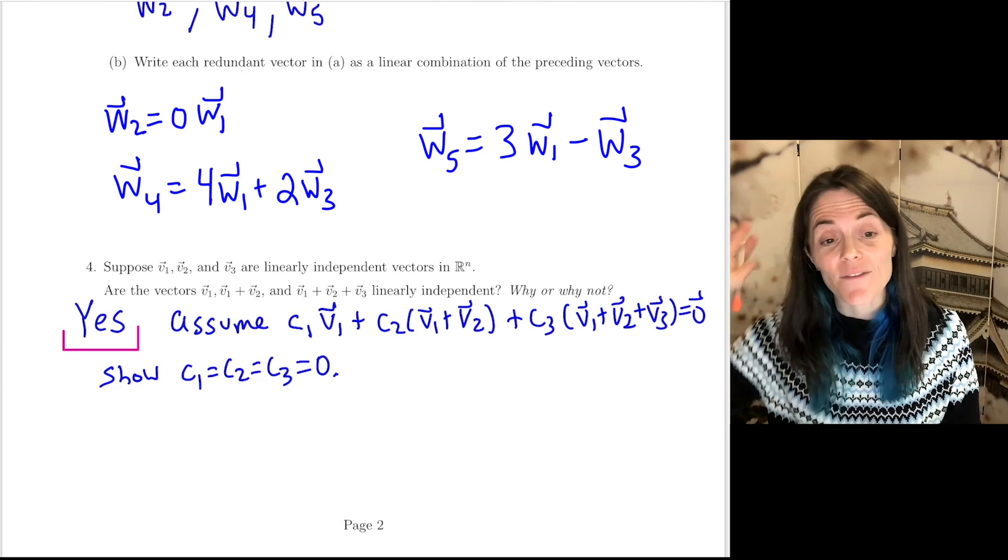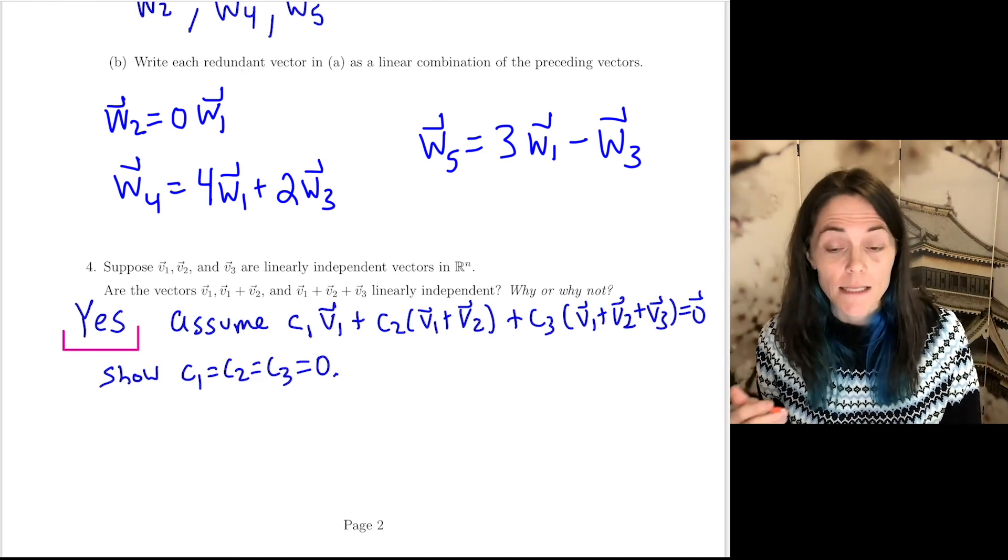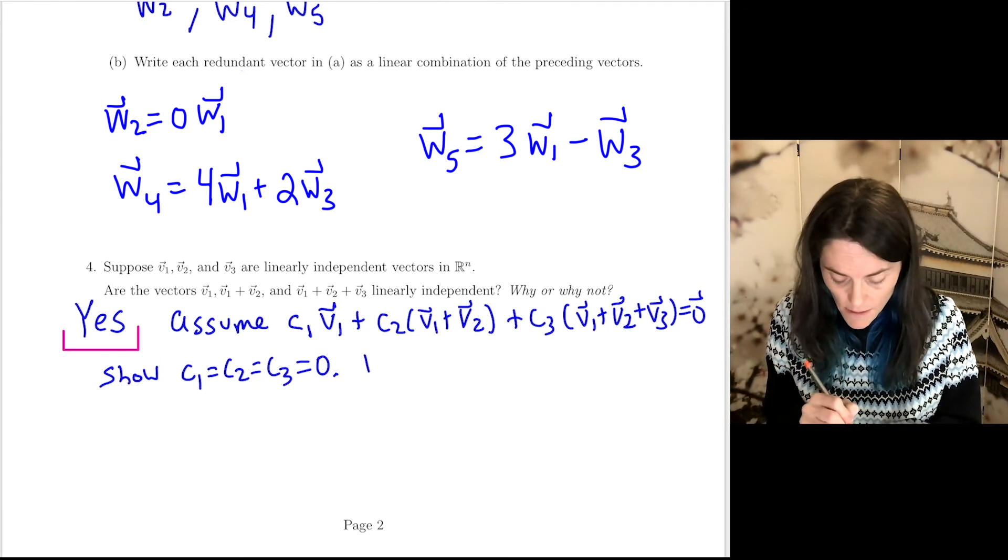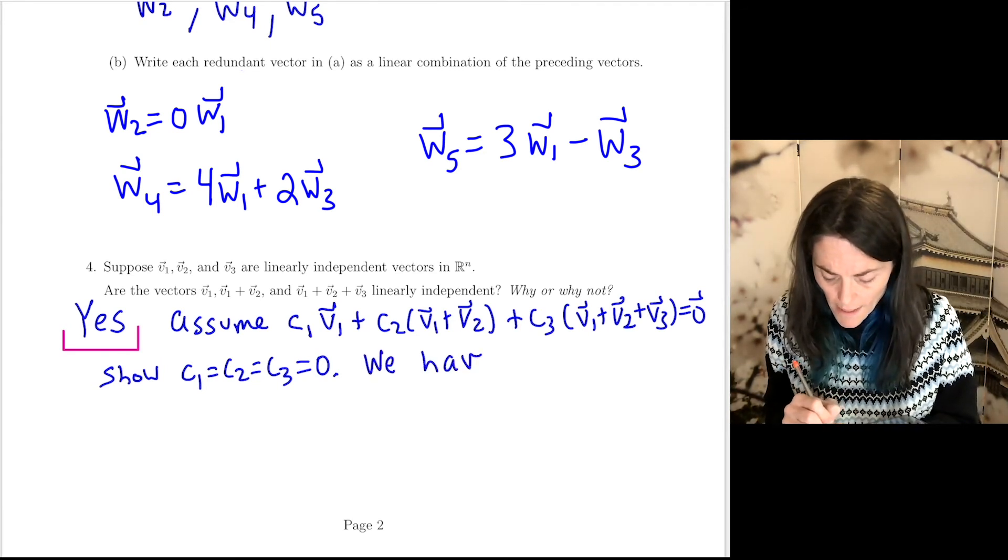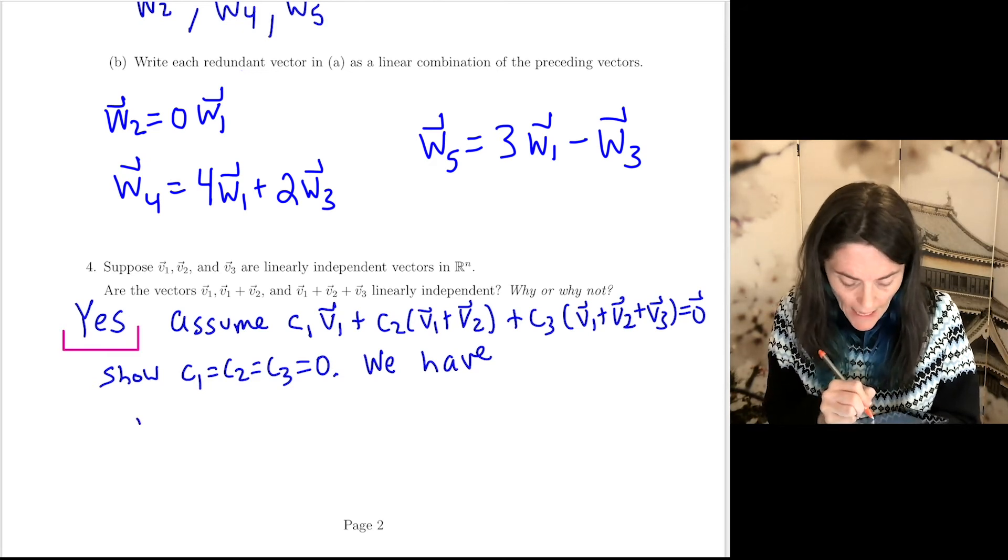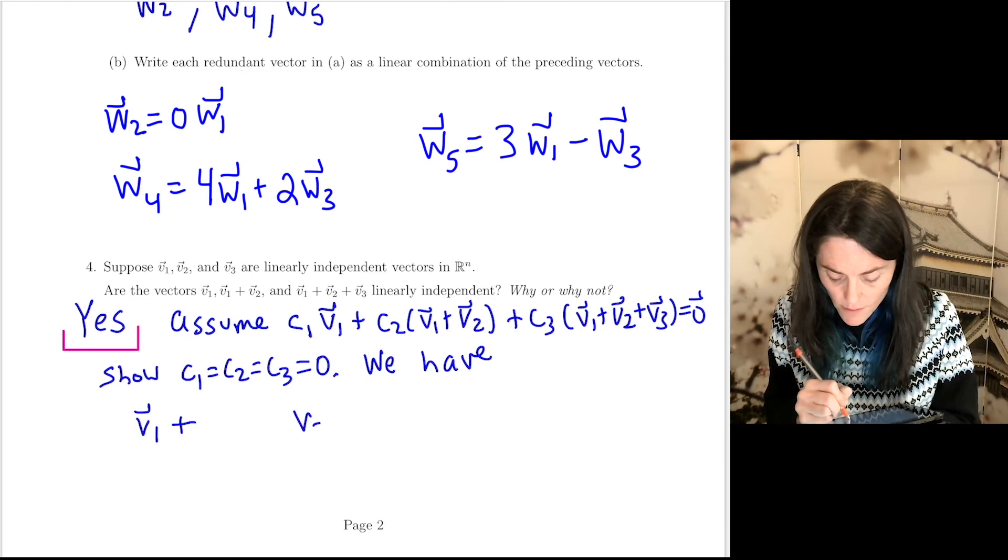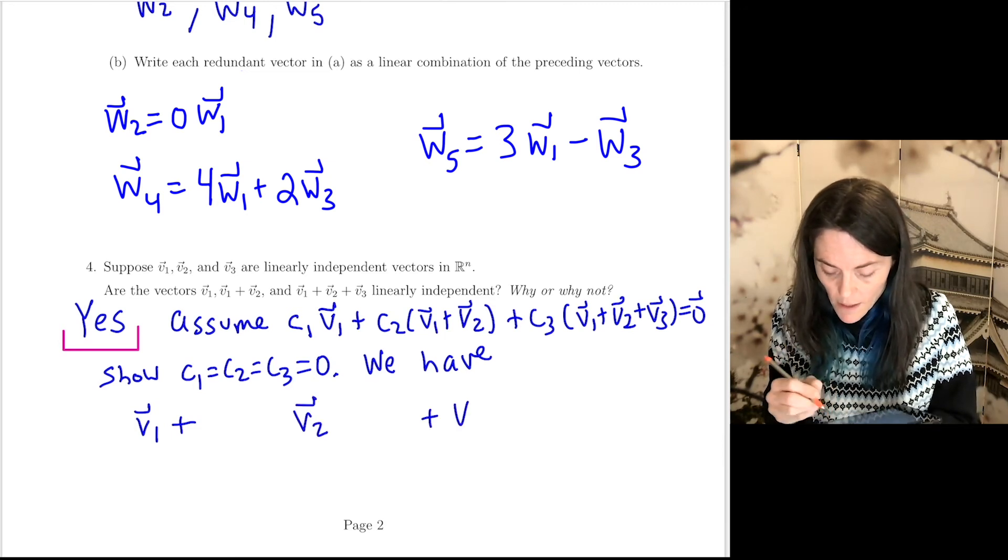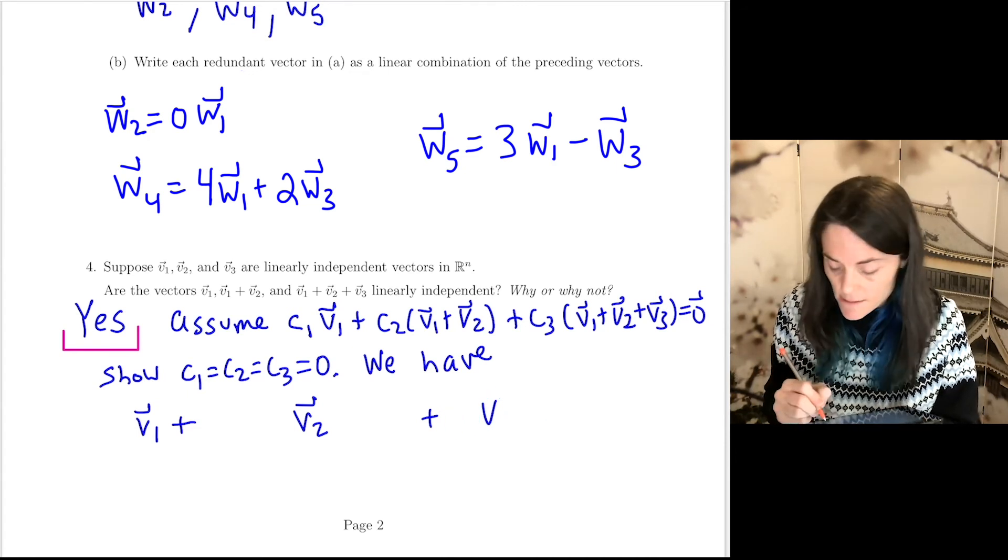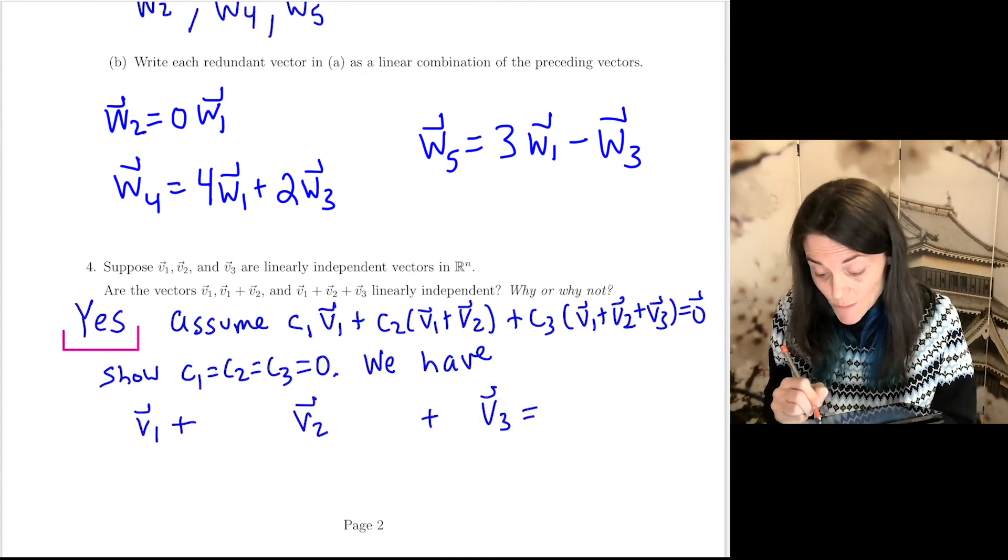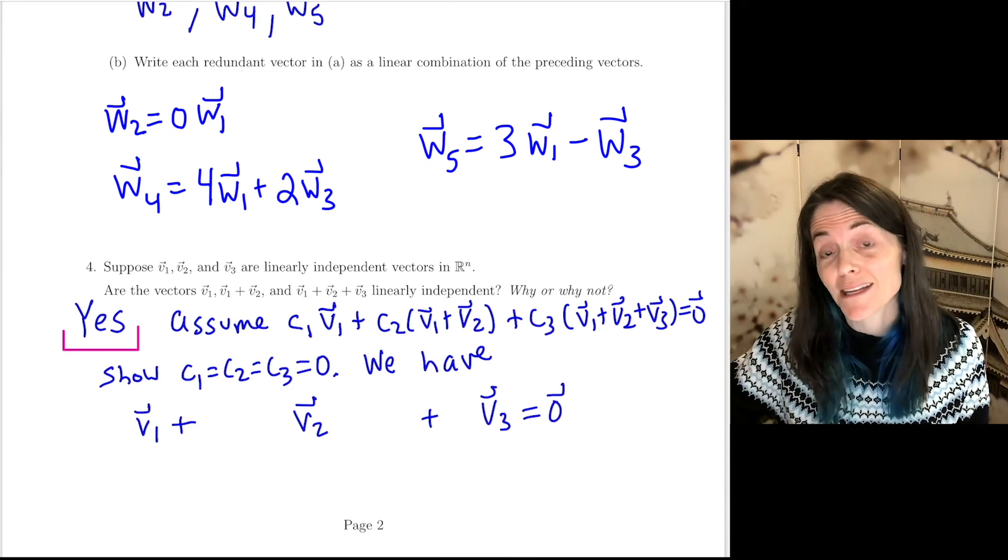The only linear relation amongst these three vectors is the trivial one. But I'm going to use the fact that V1, V2, V3 are independent. And so I can just rearrange things. I have V1 and then I have V2 and then I have V3. So I can turn this linear relation amongst these vectors into a linear relation among the vectors V1, V2, V3. And I know those are independent.